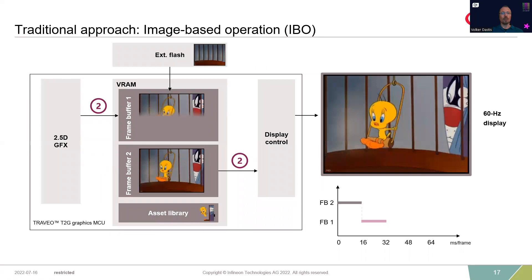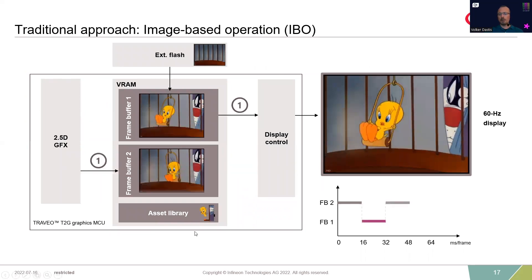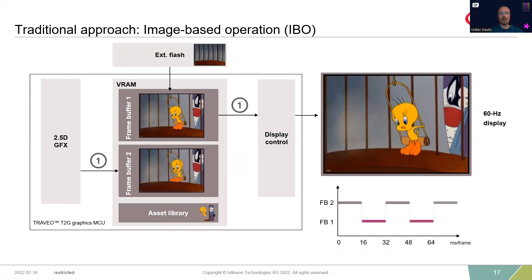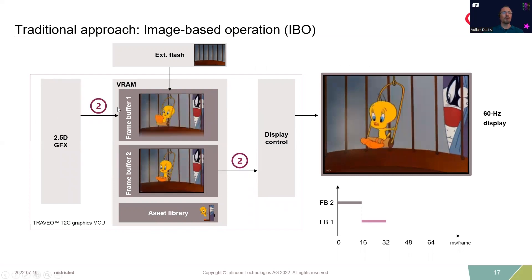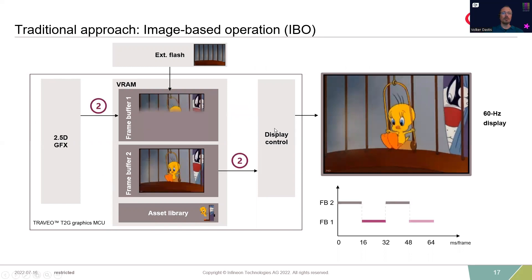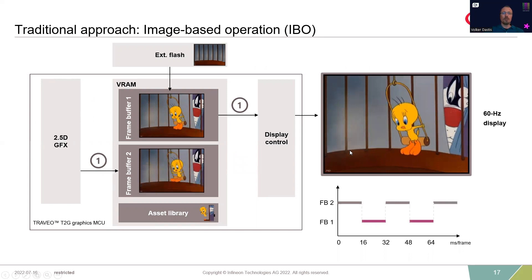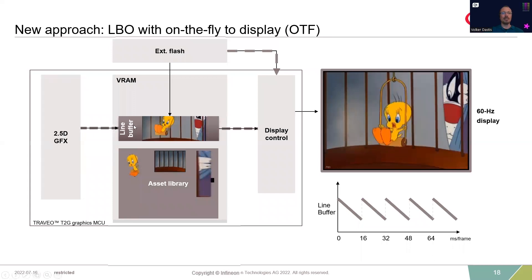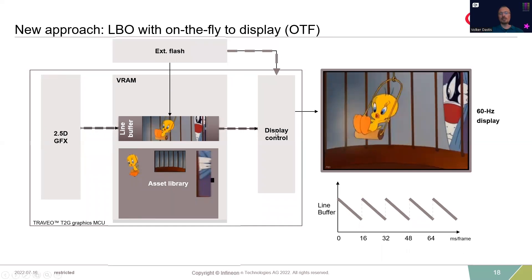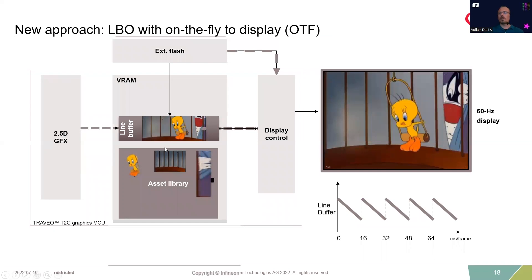Here is a short animation showing both use cases. In IBO mode, you have the classical approach with two buffers — the engine always writes to one and the display controller reads from the other to create the image. In OTF mode it is much more dynamic: the 2.5D engine continuously creates lines which go into a line buffer working like a ring buffer, and the display controller always fetches different lines and brings them to the display. This gives a much smaller buffer with a continuous workflow.